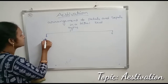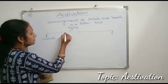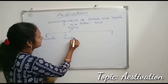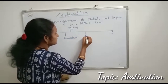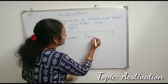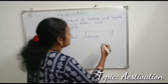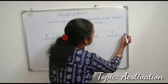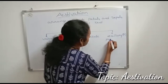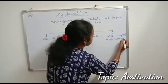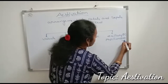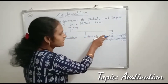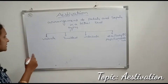Estivation is divided into some types. The main types are: valvate estivation, twisted estivation, imbricate estivation, and vaxillary or papilionaceae estivation.